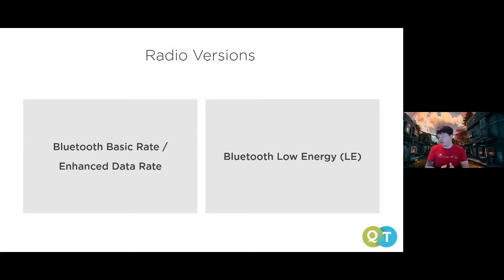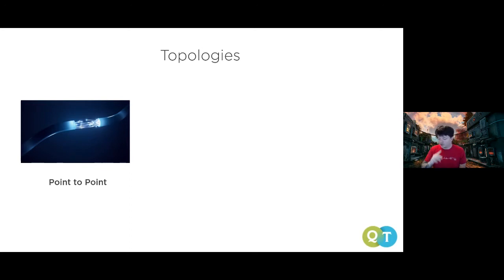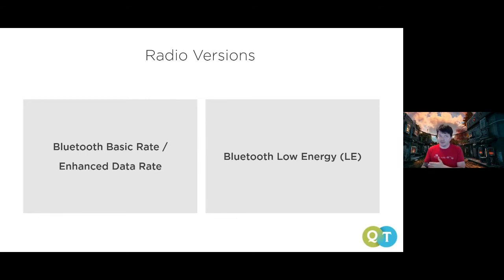The second important part of BLE is contract-based communication. Instead of raw bits and bytes over a socket, BLE has the idea of a contract — you can think of it more like building an HTTP API, using a command-response style of communication rather than building on top of a raw socket.